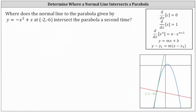To better understand this question, let's look at the graph below. We have the graph of the parabola and we are given the point negative two comma negative six, this point here. Notice how the green line is tangent to the parabola at that point, and the red line is a normal line because it's perpendicular to the tangent line at the point of tangency.